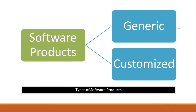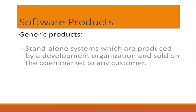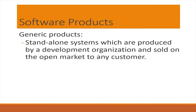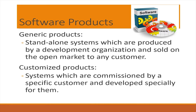There are two types of software products. The first are generic products, also called off-the-shelf software. These are standalone systems which are produced and developed in an organization and sold on the open market to any customer. The second are customized products — systems that are commissioned by a specific customer and developed specifically for them.